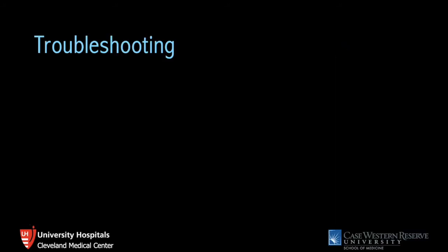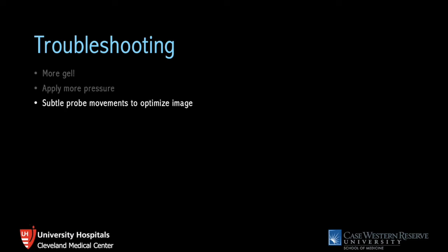Some troubleshooting tips: use more gel, as insufficient gel leads to poor image quality. Sometimes you need to apply more pressure, especially in the subxiphoid region but also in the parasternal and apical views. Get comfortable with subtle probe movements — rotating, fanning, rocking, or sliding along the chest wall — to optimize your images. Left lateral decubitus positioning will bring the heart closer to the chest wall and often significantly improves image quality.